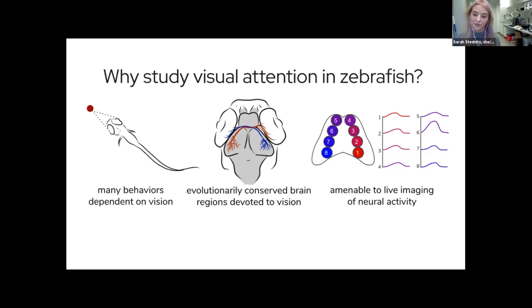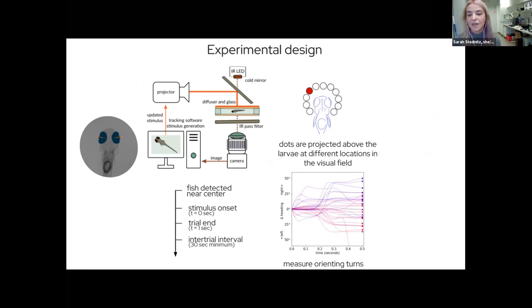The experimental setup at this stage is behavioral. We want to study the underlying computations that permit this behavior to happen, so we need to demonstrate that it actually occurs in our animal the size of an eyelash. We have our fish in an arena and we're recording from below, doing live tracking of the body and head position.